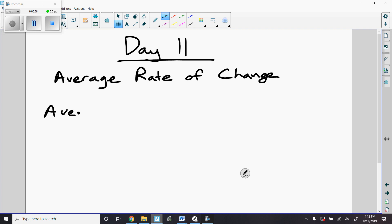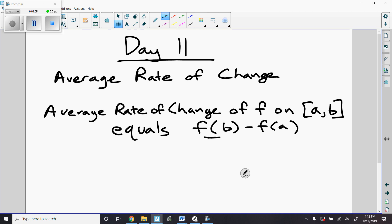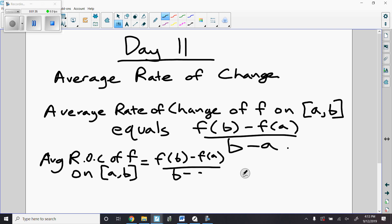Average rate of change of a function f on an interval [a,b] equals f(b) minus f(a) over b minus a. That is our average rate of change formula. So again, writing it as a formula, we have average ROC of f on an interval [a,b] equals f(b) minus f(a) over b minus a. That's a formula that we're going to want to memorize.